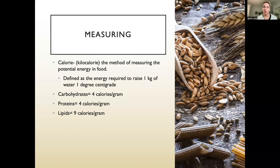Calories are defined as the energy required to raise one kilogram of water one degree centigrade. A carbohydrate is four calories per gram, protein is four calories per gram, and a lipid is nine calories per gram. This means you can eat a greater volume of carbs and protein for fewer calories than if you eat something high in fat.